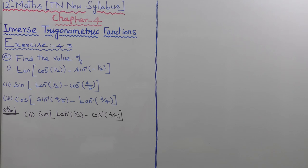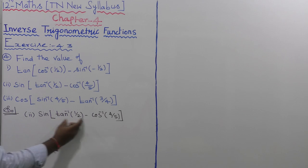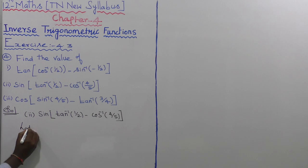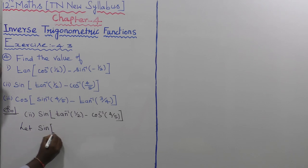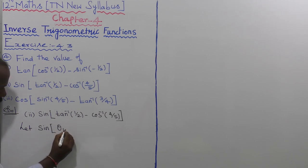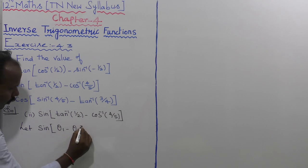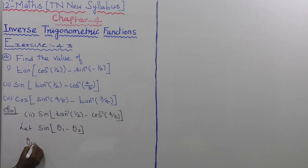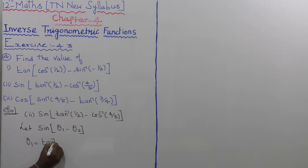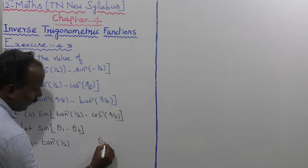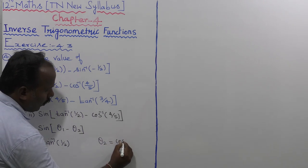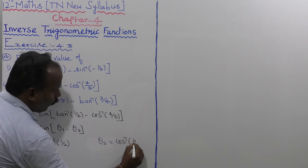First of all, let us take the inside value. This one is going to theta 1 and this one is going to theta 2. So, first of all, let us consider sine of theta 1 and sine of theta 2. Where theta 1 is equal to tan inverse of 1 by 2, and theta 2 is equal to cos inverse of 4 by 5.